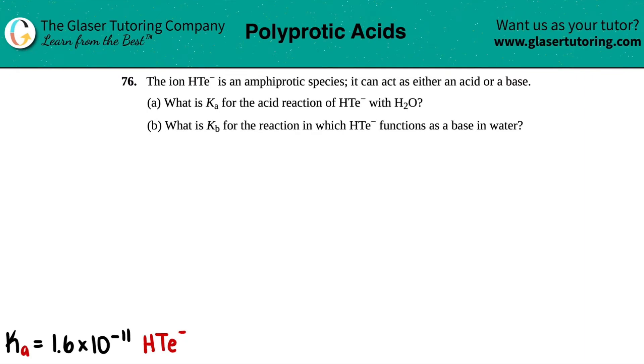Number 76, the ion HTE- is an amphiprotic species. It can act as either an acid or a base. And then we have letter A. So letter A says, what is the Ka for the acid reaction of HTE- with H2O?